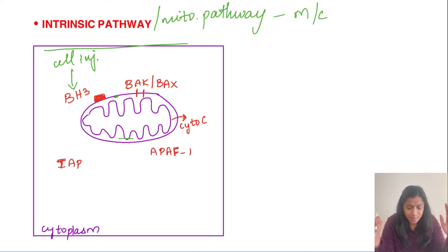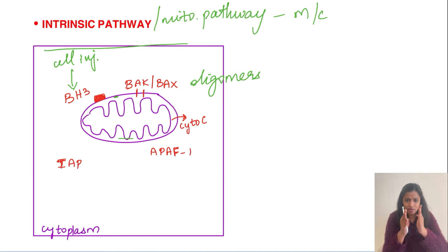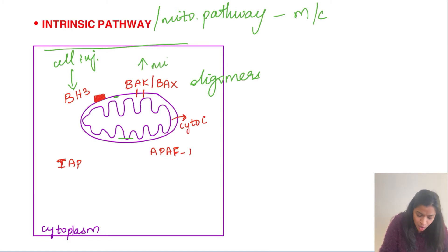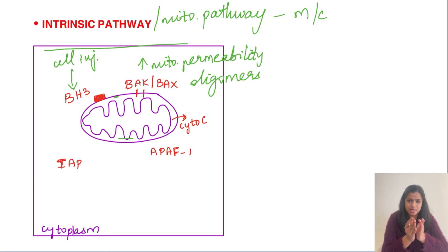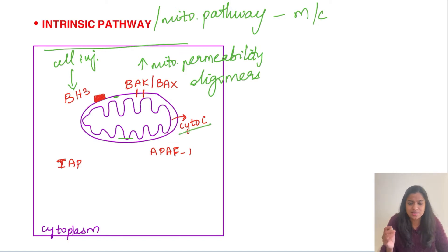When Bcl-2 goes down and Bax/Bak are upregulated, Bax and Bak form oligomers. These oligomers insert themselves into the outer mitochondrial membrane, forming channels that increase mitochondrial membrane permeability. As a result, whatever was present inside the mitochondria begins to leak out into the cytoplasm.